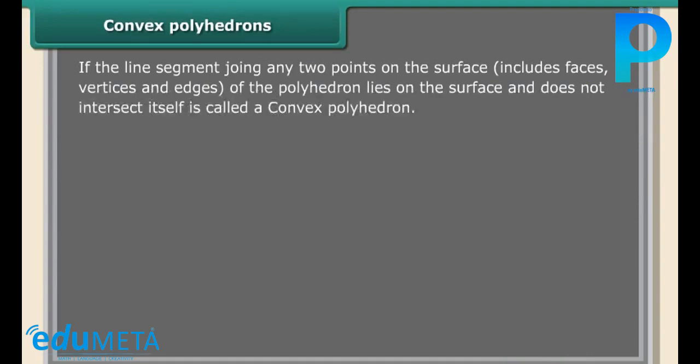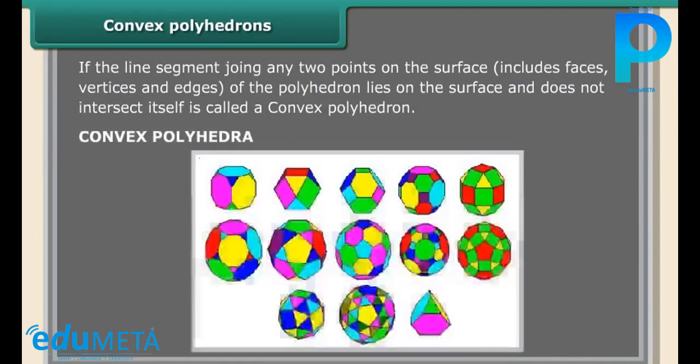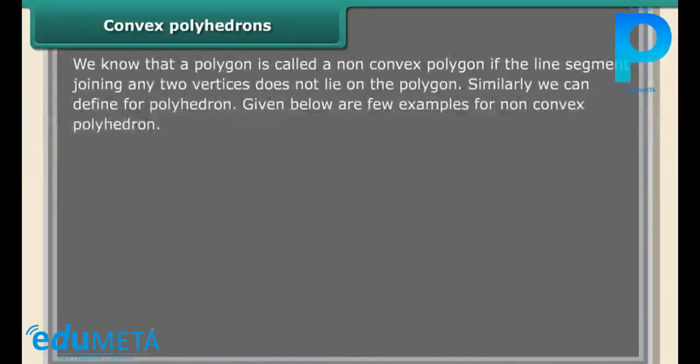lies on the surface and does not intersect itself, is called a convex polyhedron. We know that a polygon is called a non-convex polygon if the line segment joining any two vertices does not lie on the polygon. Similarly we can define polyhedron. Given below are a few examples for non-convex polyhedron.